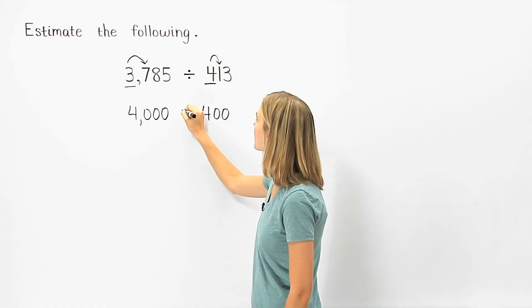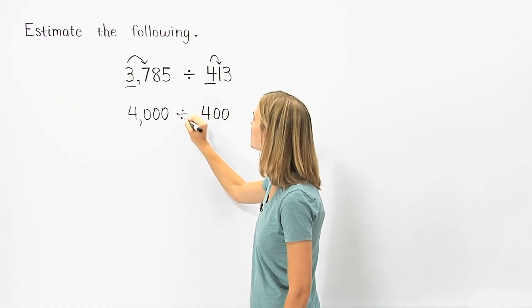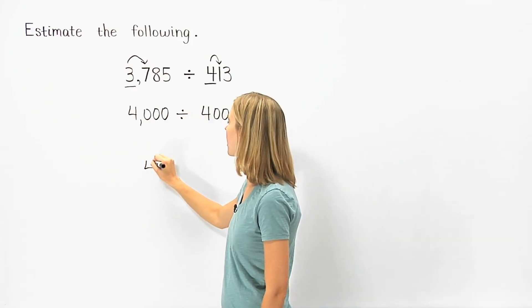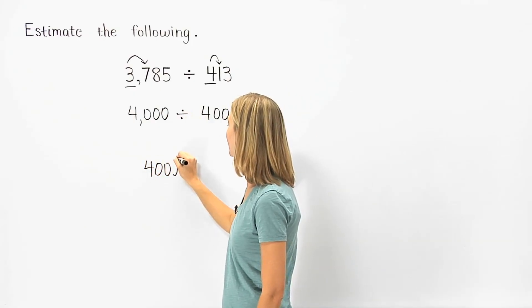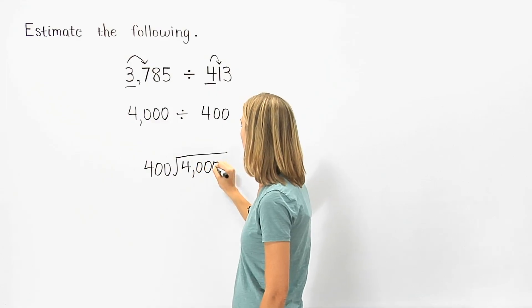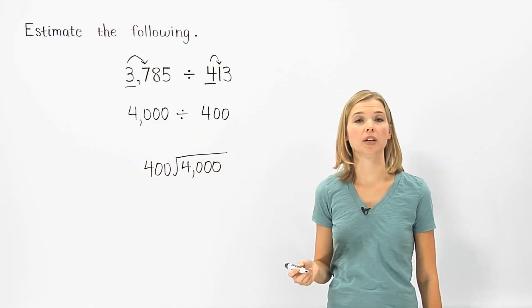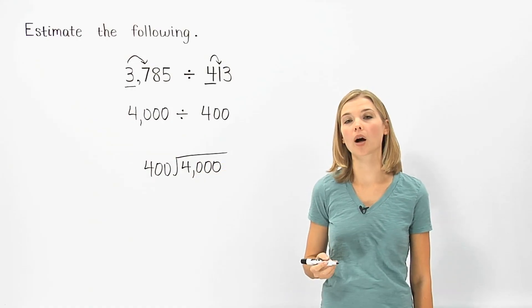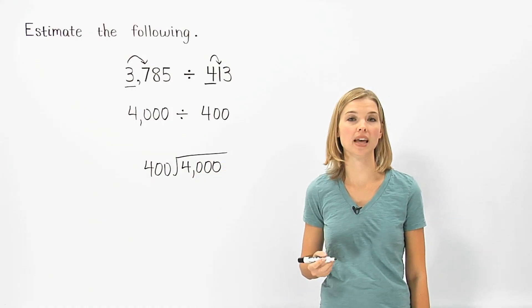So we have 4,000 divided by 400, or 400 divided into 4,000. Just like a multiplication problem, a division problem becomes easier if our numbers end in zeros.